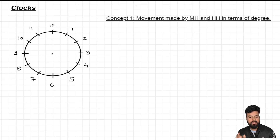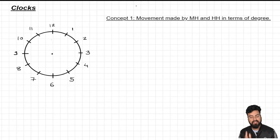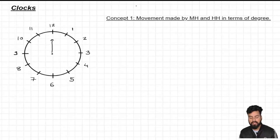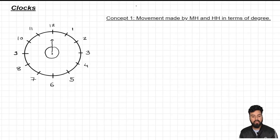The first basic thing to understand is the maximum movement which can be made by any hand — be it minute hand, hour hand, or second hand — that would be 360 degrees. For example, if the minute hand starts at a position and you calculate the movement made in one hour, the minute hand comes back to its original position. That maximum movement is 360 degrees.